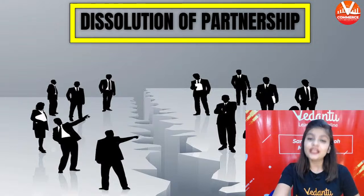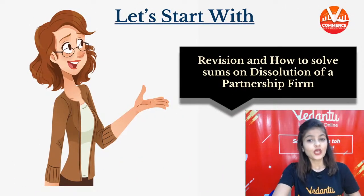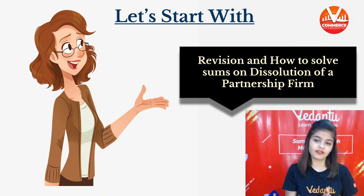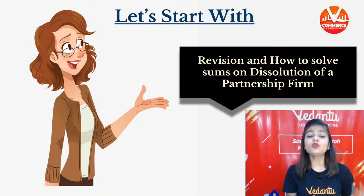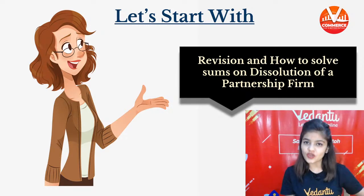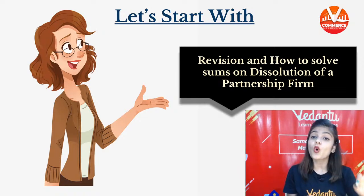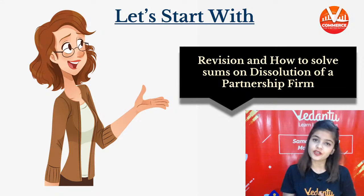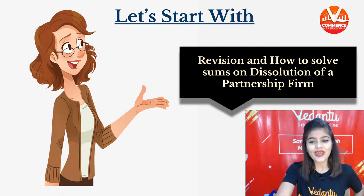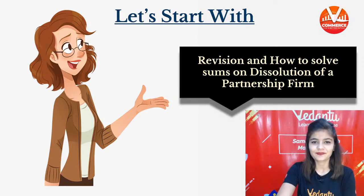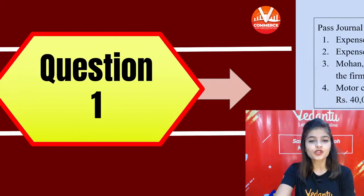Let's start the new chapter revision — Dissolution of a Partner. We are going to see how to do revision of this chapter, which questions are important and how to approach them. As per the new CBSE update, there will be a total of eight journal entries, so today we will be focusing more on the journal entry part because there are a lot of journal entries in this chapter.